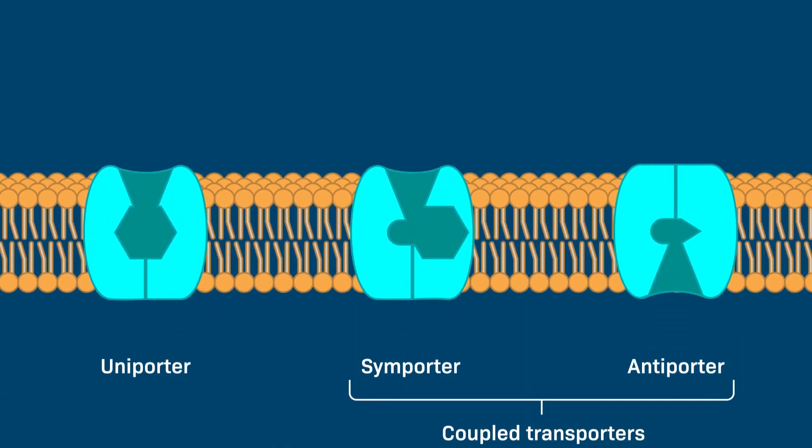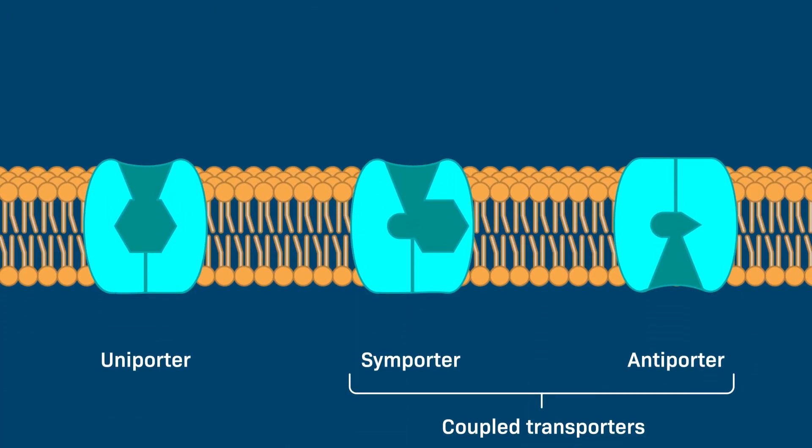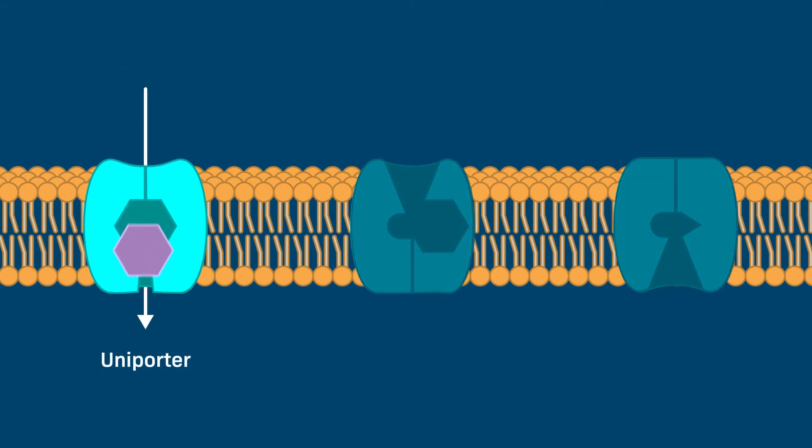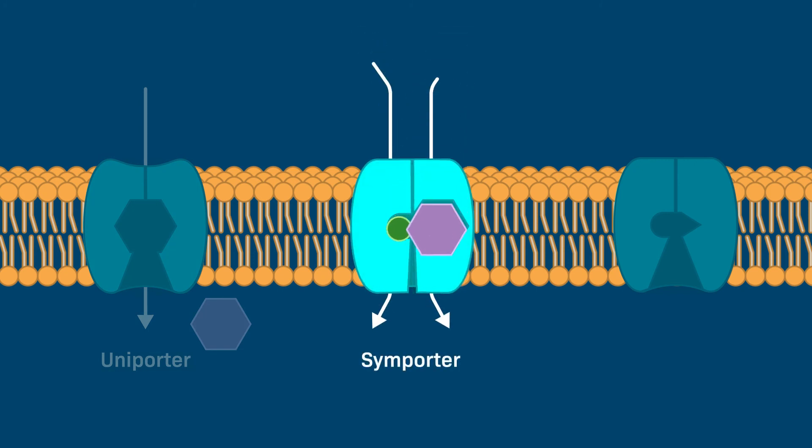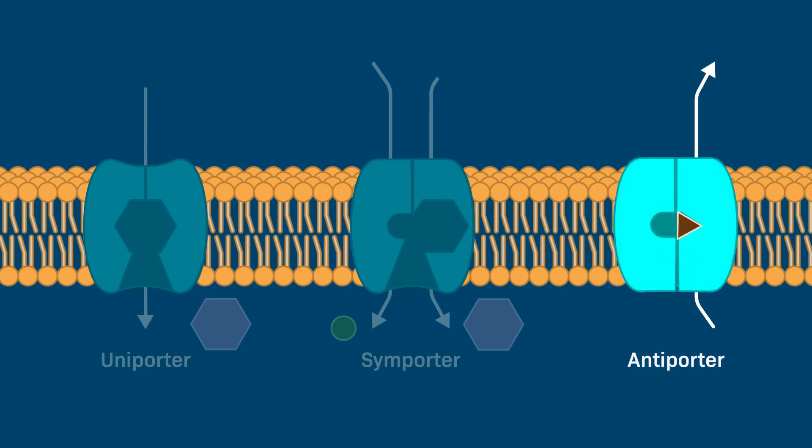In sum, carrier proteins bind to solute molecules and change conformations as they transport solutes across the membrane. Carrier proteins can be grouped into three types: uniporters move one type of solute molecule, symporters carry two types of solute molecules in the same direction, and antiporters move two types of solutes in opposite directions.